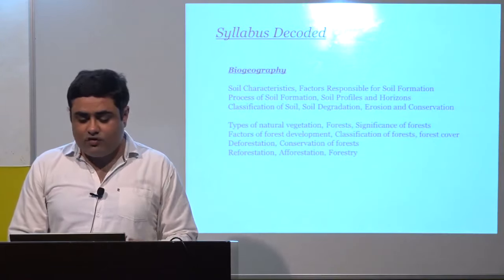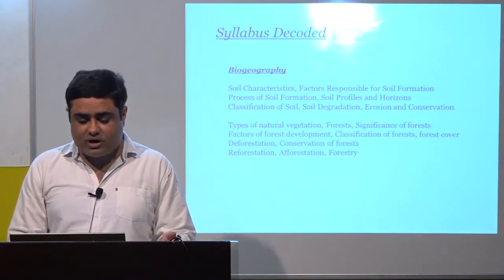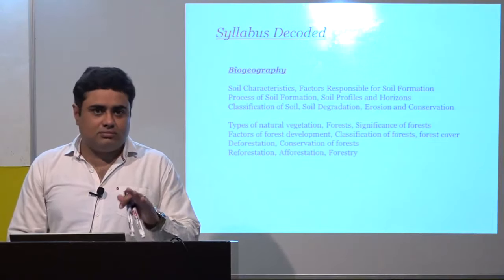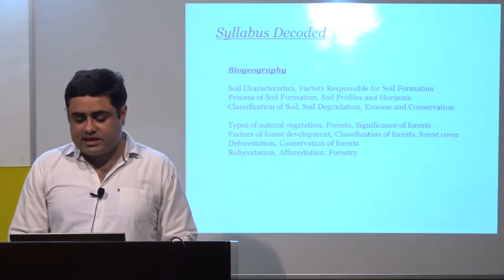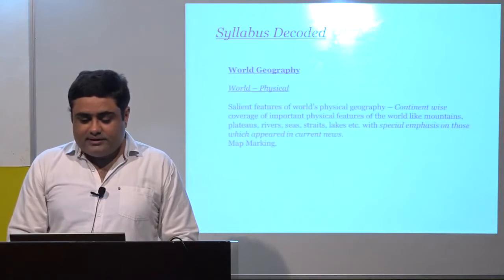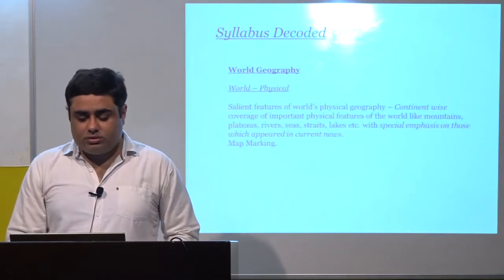Tides — types, causal factors, important tides, navigation, fishing. Resources of the oceans. Wave motion — characteristics of waves. Coral reefs and coral bleaching. Biogeography: soil characteristics, soil formation, soil profile, soil degradation, erosion, conservation. Types of natural resources. Natural vegetation — forest significance, deforestation, conservation of forests.